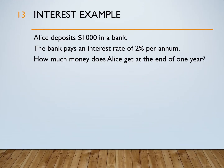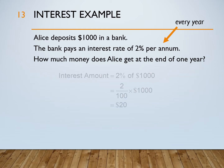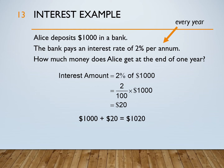Let's look at an example on interest. Alice deposits $1,000 in a bank. The bank pays an interest rate of 2% per annum, which means 2% every year. How much money does Alice get at the end of one year? We can find the interest amount, which is 2% of $1,000. That is equal to 2 out of 100 times $1,000, and you get $20. To find how much money Alice gets at the end of one year, we add $1,000 and the interest of $20 together, and we get $1,020. So Alice gets $1,020 at the end of one year.